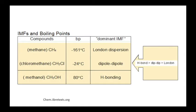We see this trend in boiling points with other types of intermolecular forces as well. This table shows how boiling points change depending on the intermolecular forces. When we talk about dominant intermolecular force, this relates to the fact that a molecule may have more than one intermolecular force at work.